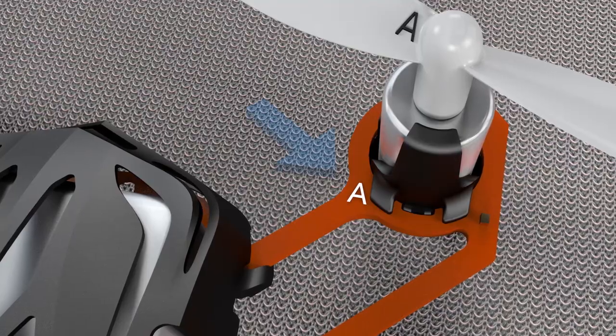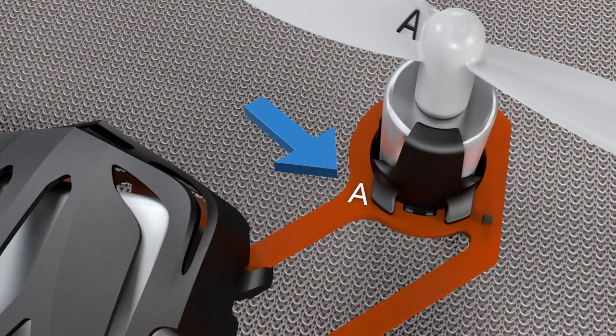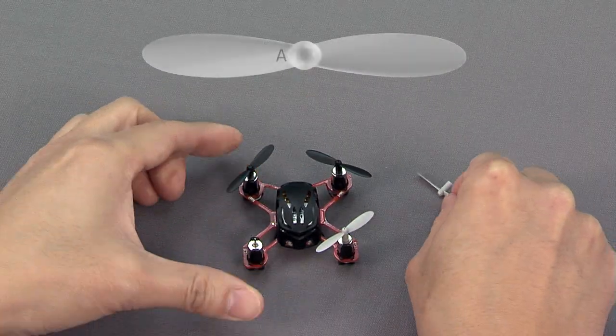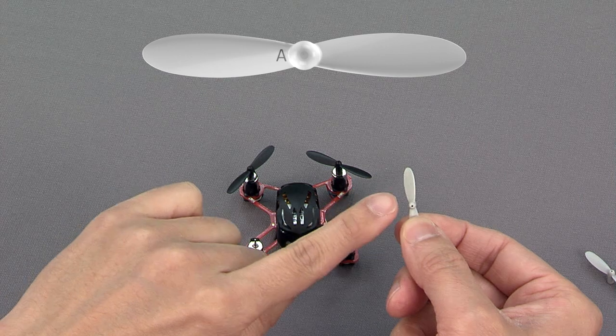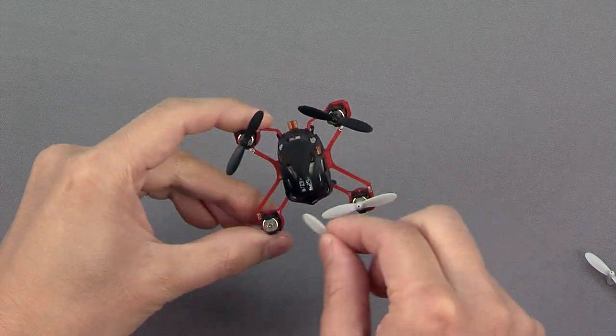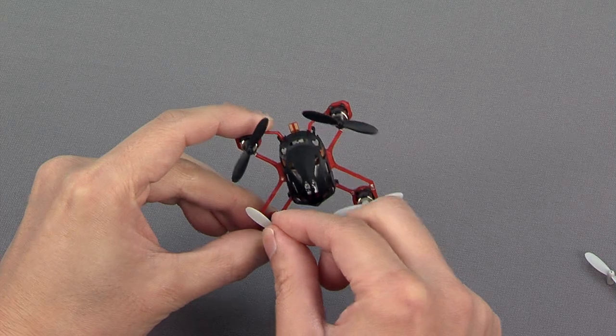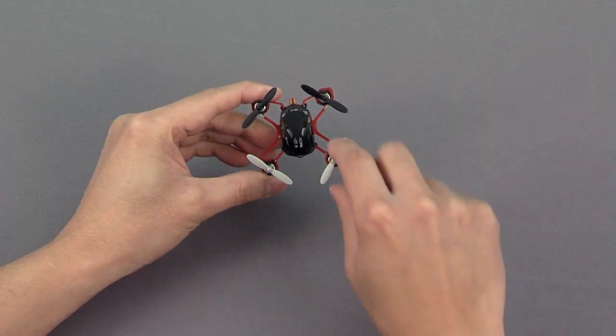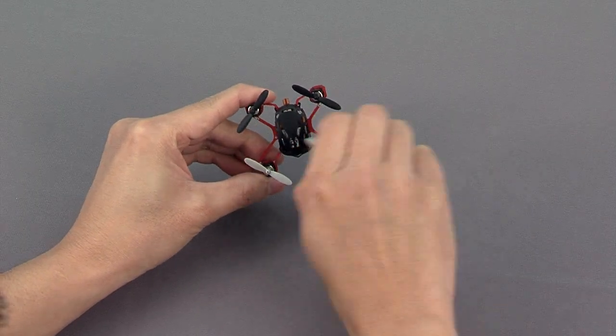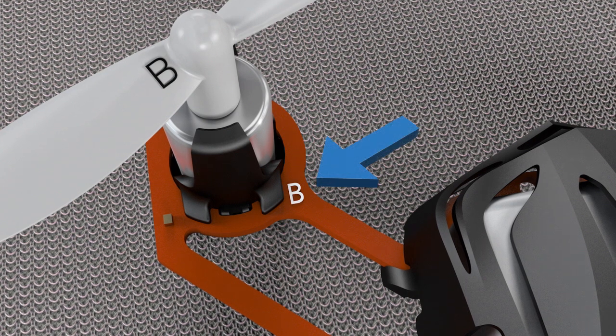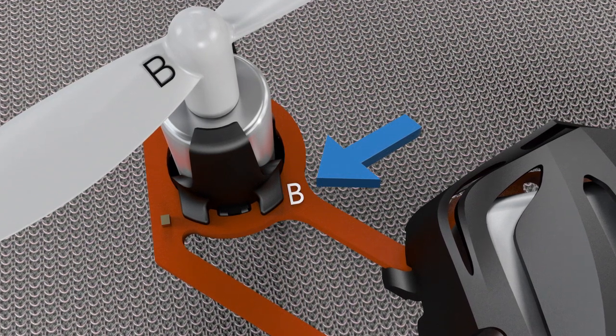Look for a small A on the quadcopter. Find the gray rotor blade with the matching A on it. Install the blade by sliding it face up onto the motor shaft. Now repeat the process, this time matching the gray B rotor blade to the B printed on the quadcopter.